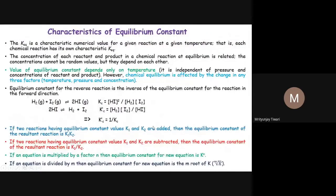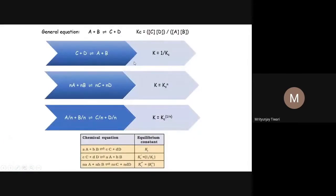We've also seen how the equilibrium constant is related to different reactions. If you reverse the reaction, the equilibrium constant of the reverse reaction equals 1 divided by the equilibrium constant of the forward reaction. Similarly, if you multiply the entire equation by a scalar n — so nA + nB gives nC + nD — the new equilibrium constant is the original Kc raised to the power n. If you divide by n, the equilibrium constant becomes Kc to the power 1/n.